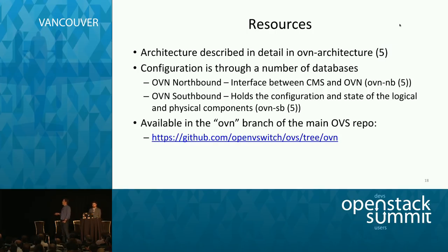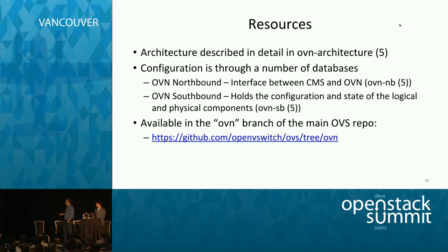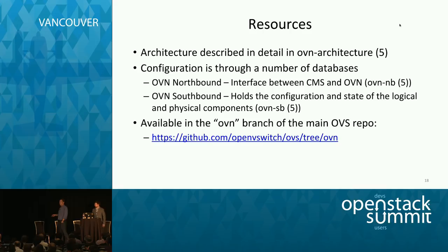All of this is documented in the OVN architecture man page available in the OVN branch of the OVS repo. Configuration is done through the northbound and southbound databases, with corresponding man pages — ovn-nb and ovn-sb — that describe those databases. When you build OVN, it generates those man pages. We currently have a special OVN branch, but we'll be merging it fairly soon into the main OVS repo.